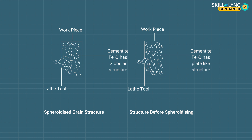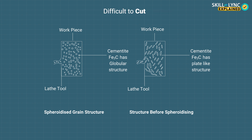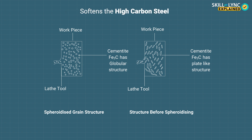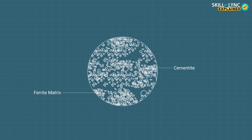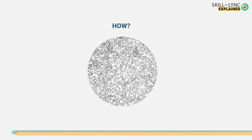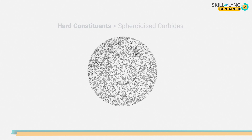The final topic is spheroidizing annealing. High carbon steel has cementite and ferrite in its structure. Cementite is very hard and brittle and has a plate-like structure, which is difficult to cut using cutting tools. To make cementite more machinable, the spheroidizing process is done, which softens the high carbon steel and improves its machinability. The microstructure obtained after this heat treatment consists of globules of cementites or carbides in a ferrite matrix. When spheroidizing is done, hard constituents like pearlite, bainite, and martensite are turned into spheroidized carbides in a ferrite matrix, yielding a soft, machinable structure.